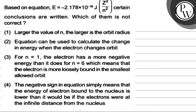Hello. Let's read this question based on the equation E is equal to minus 2.178 into 10 to the power minus 18 joules into Z square by N square. Certain conclusions are written — which of them is not correct?